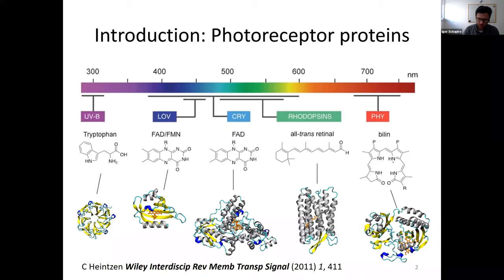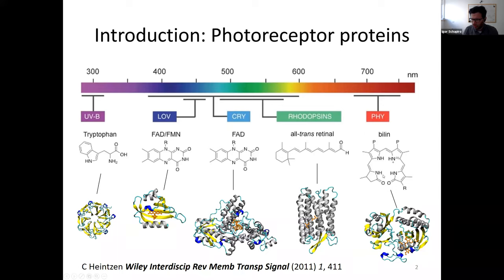What are the common photoreceptor proteins? Here's an overview of the major families in plants and fungi. We have tryptophan, present in the protein UVR8; flavin, found in the light-oxygen-voltage sensing LOV domain protein; cryptochromes, which also have a flavin chromophore; and my favorite family — rhodopsins, also called retinal proteins, because all of them have the retinal chromophore.